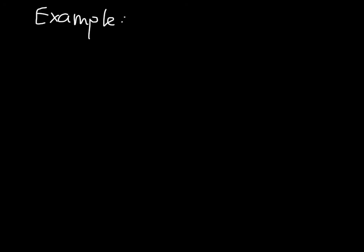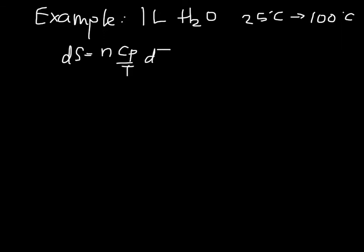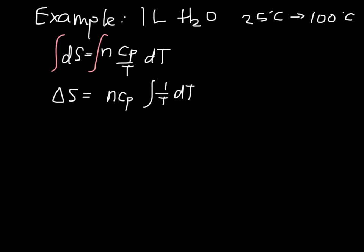Let's calculate the entropy change for the same one liter of water, heating from 25°C to 100°C without boiling. Starting with dS = n·Cp/T · dT and integrating both sides, since Cp is constant here, we get delta S = n·Cp · ln(T) evaluated from T1 to T2.